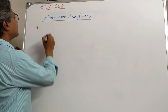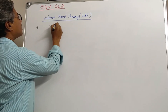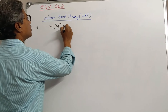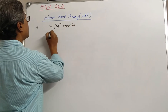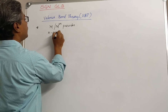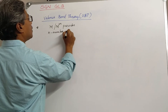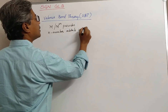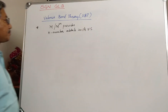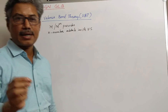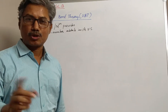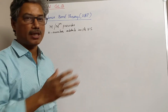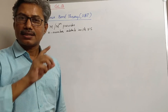The first principle is that the central metal atom or metal ion provides n number of orbitals in its valence shell. The metal atom or ion which is about to form the complex will provide the required number, that is n number, of orbitals in its outermost shell.